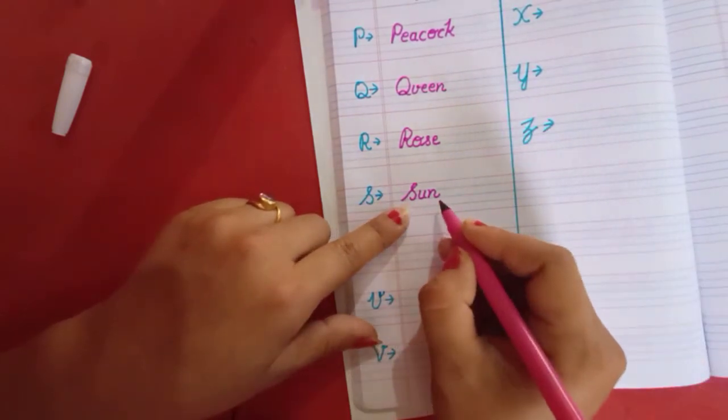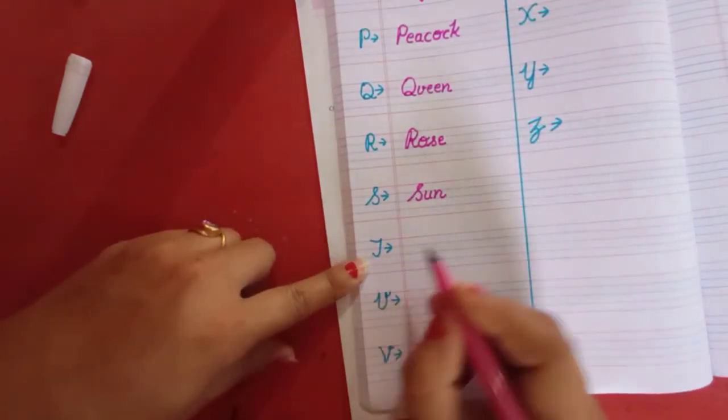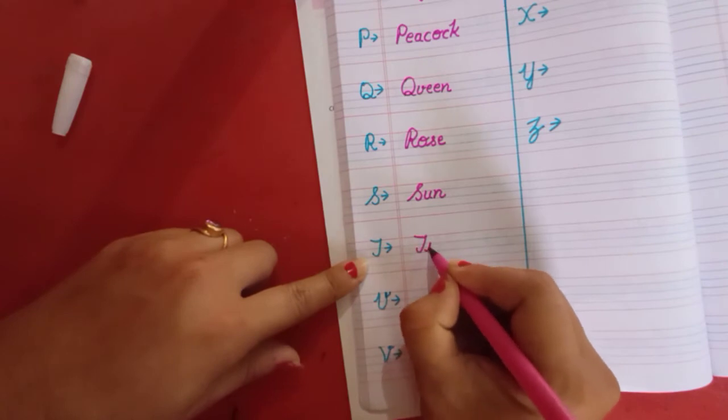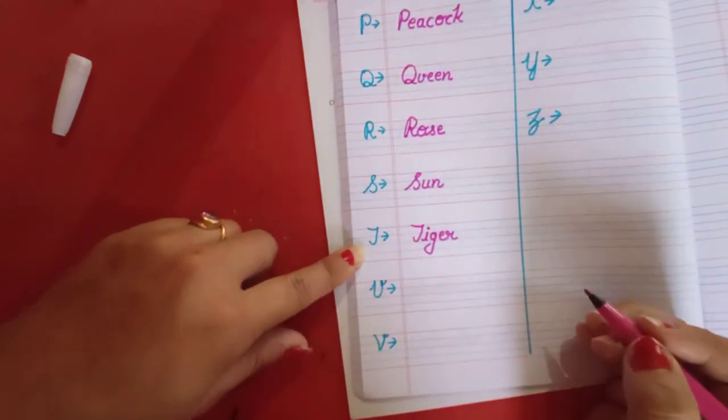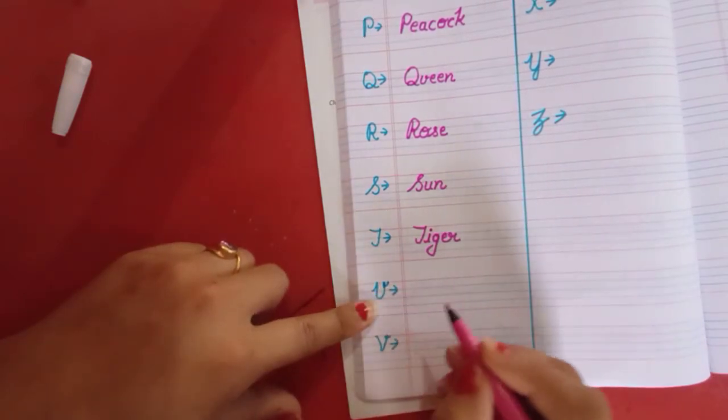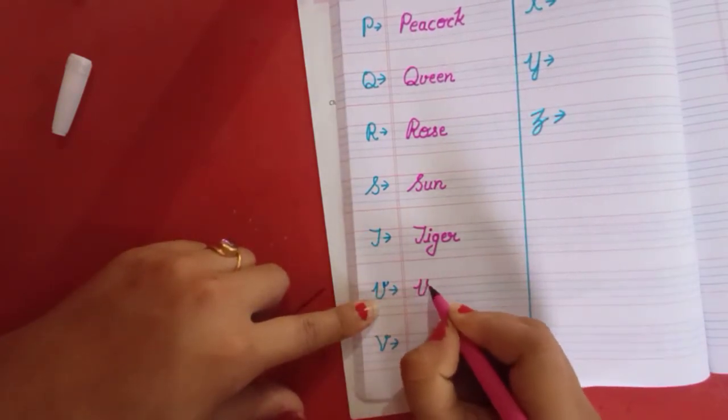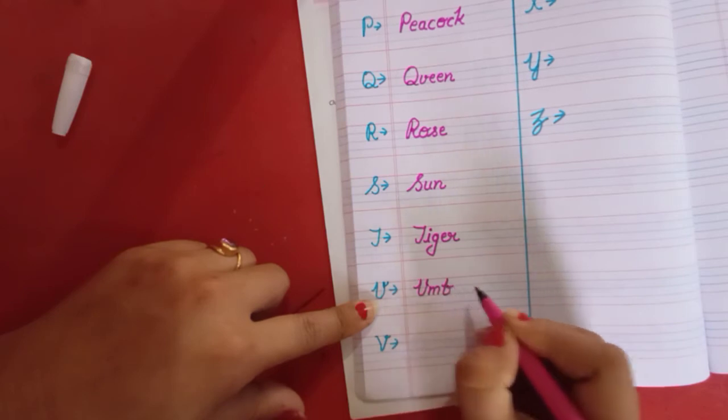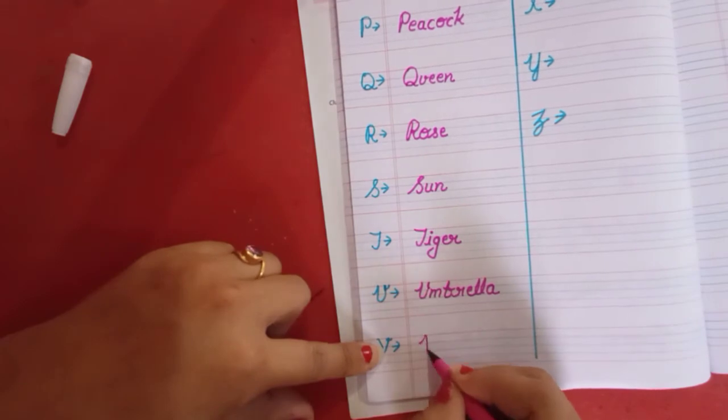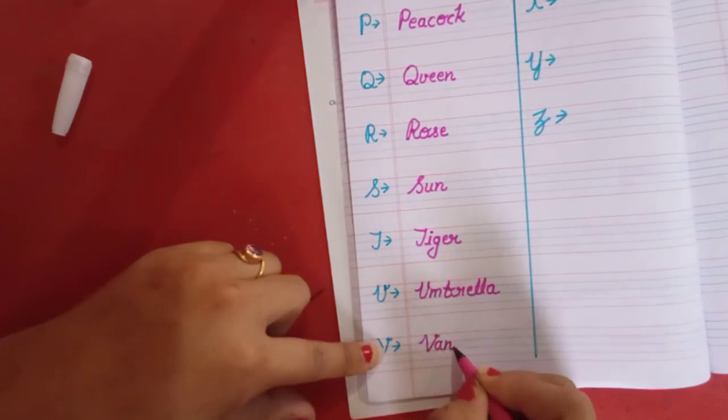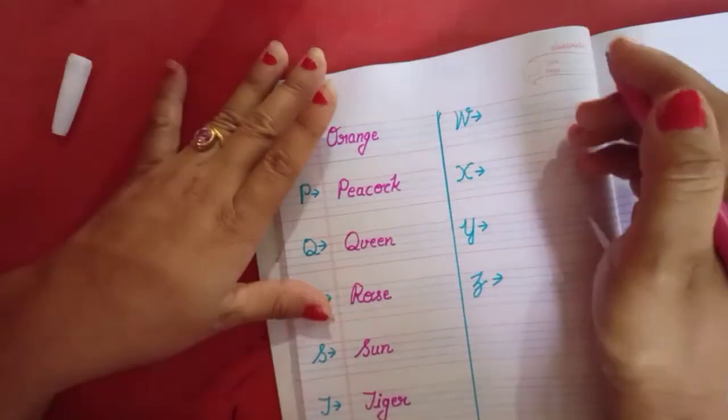T for tiger. T I G E R tiger. U for umbrella. U M B R E double L A umbrella. V for van. V A N van.